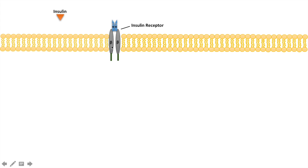Insulin will bind to the extracellular alpha subunits. The beta subunits themselves have kinase activity, and once insulin binds to the alpha subunits, the beta subunits become activated and autophosphorylate themselves on tyrosine residues.